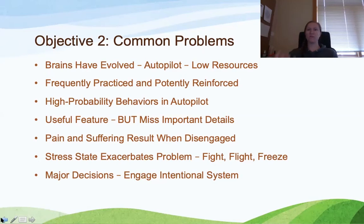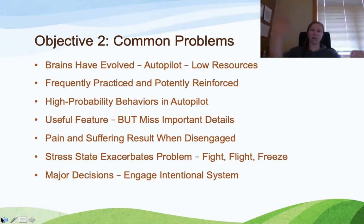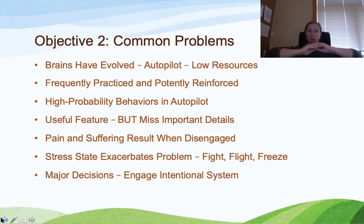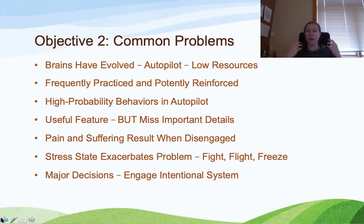Those behaviors happening on autopilot are the ones that have been frequently practiced and potently reinforced. When we do things over and over and they come in contact with reinforcement, those neural networks go from a weak path to a stronger path. There are more dendrite connections, more synapses, more neuron-to-neuron connections. Those high-probability behaviors — your autopilot — are the ones that have been practiced and potently reinforced.